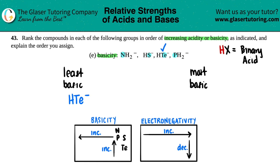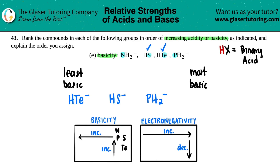That gets rid of tellurium. Now if I'm increasing, I have the next period which is phosphorus and sulfur. But as I'm going from right to left, I increase in basicity, so the next one would be sulfur — that's HS⁻. Now moving over to phosphorus — I'm increasing in basicity, so phosphorus comes next. Then as I increase upward again, I'm more basic, so the most basic would be the nitrogen one, NH2⁻. All four are now accounted for.